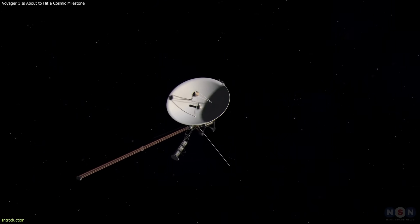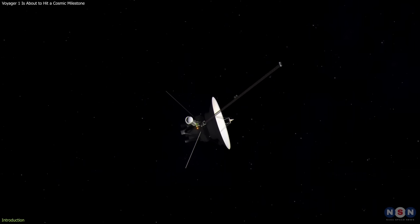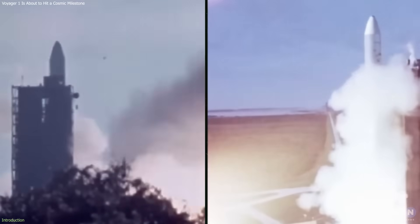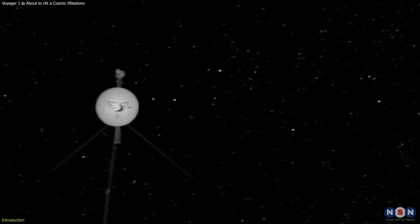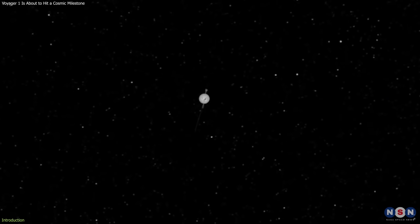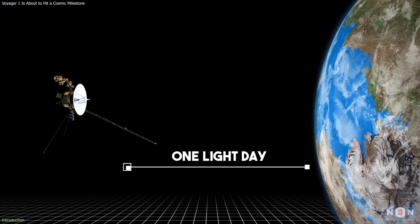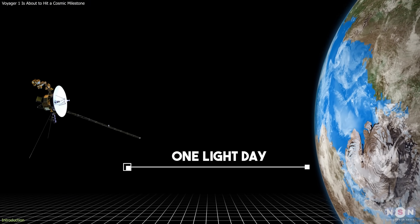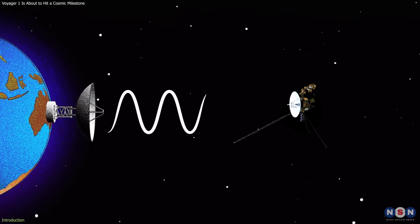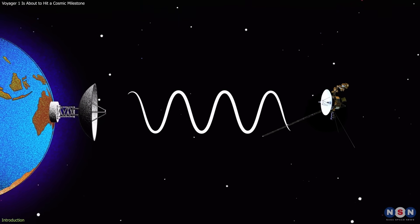NASA's Voyager 1 is about to achieve one of the most symbolic milestones in the history of space exploration. Launched in 1977, the probe has traveled farther than any human-made object, and by November 2026, it will reach one light day from Earth, the distance light travels in 24 hours. At that point, a radio signal will take a full day to reach the spacecraft and another to return.